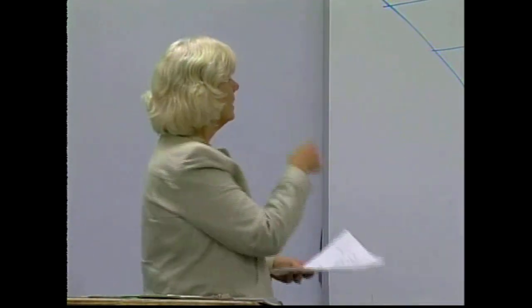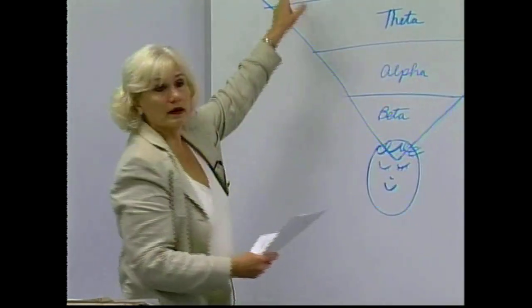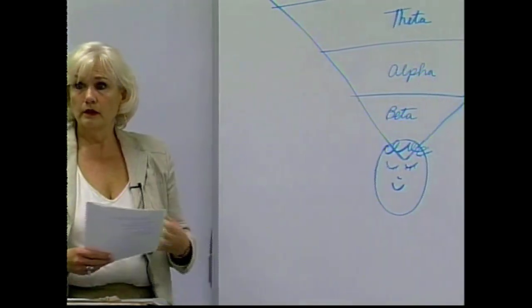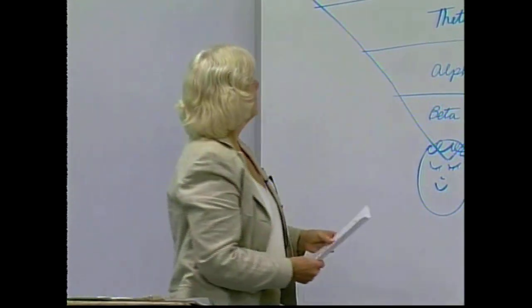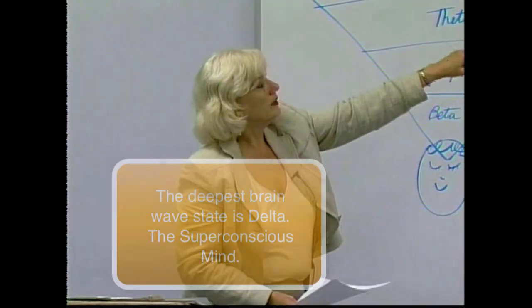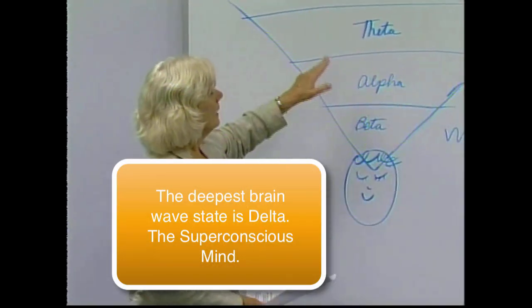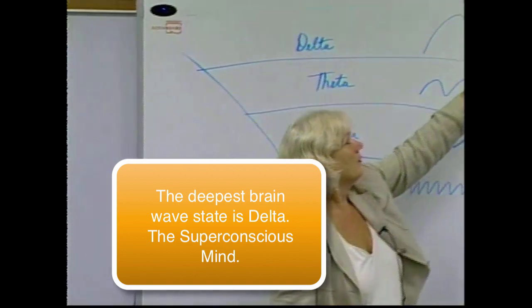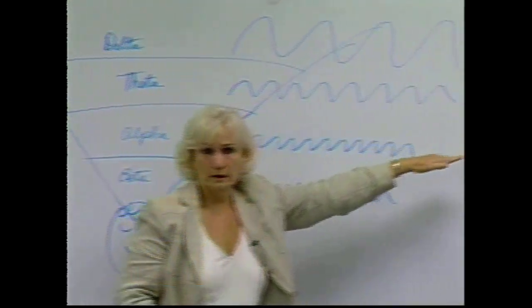We've heard these phrases: beta, alpha, theta, delta, right? We've heard those. The deepest state is delta, and that would relate to the superconscious mind. At that point, the brain waves are very big and very calm.